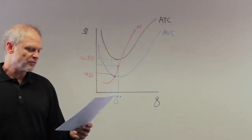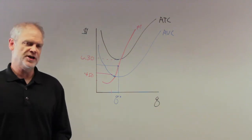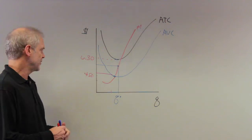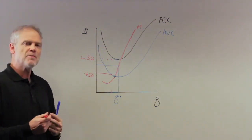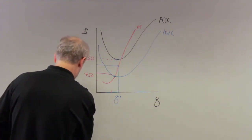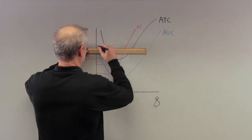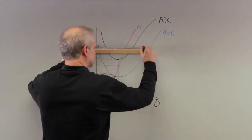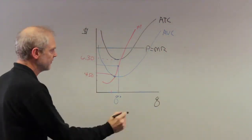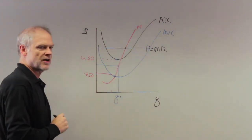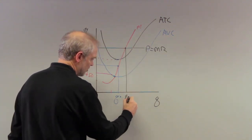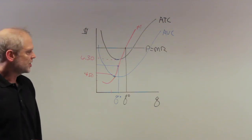Problem 5 asks: if the market price rises above $6.30, what will the firm earn? I've corrected my mistake from the previous problem — it's 6.30, not 6.50. Let's draw a price line above that point. Under perfect competition, price equals marginal revenue, and the firm sets price equal to marginal cost, which tells it how much to produce. It produces at Q naught.